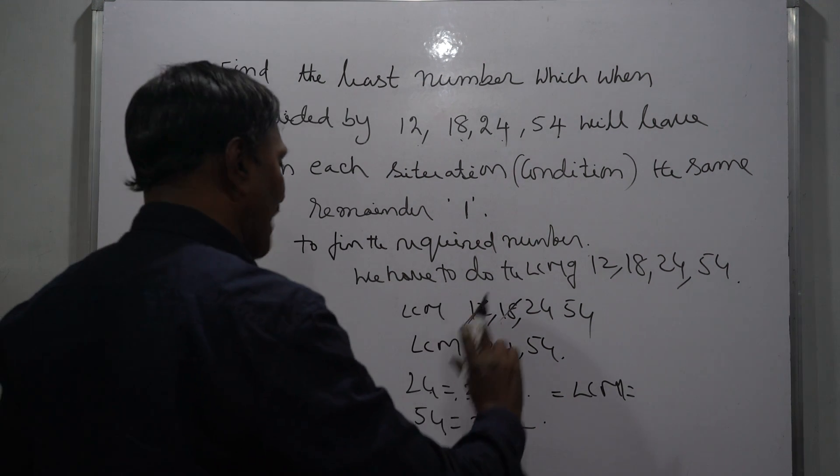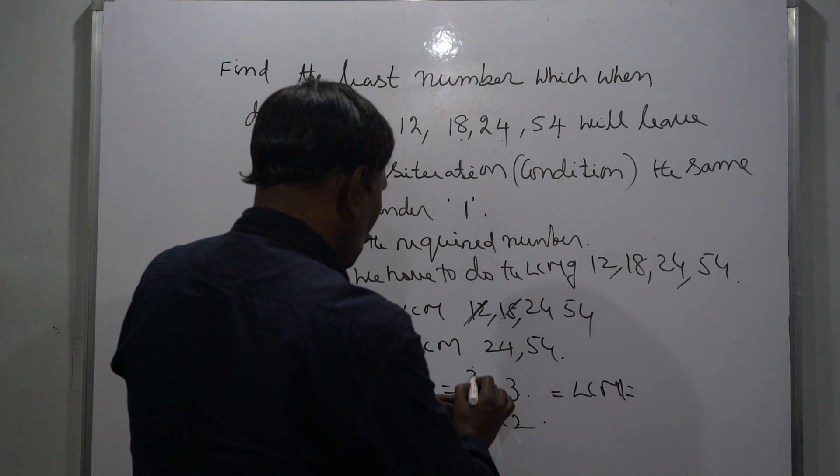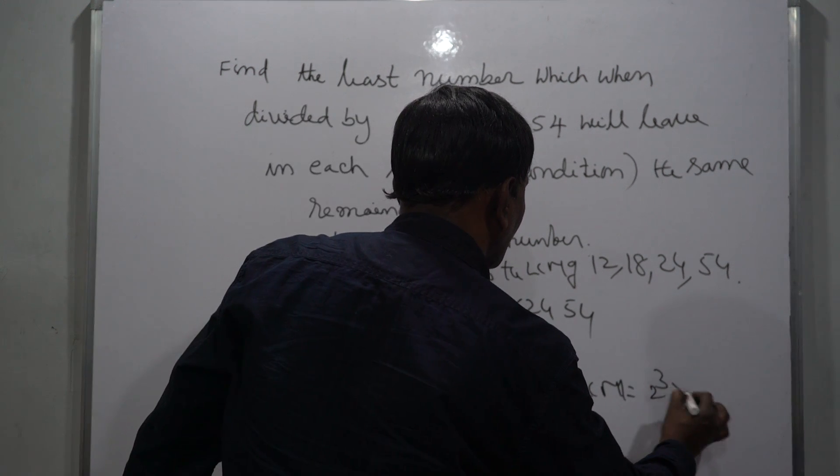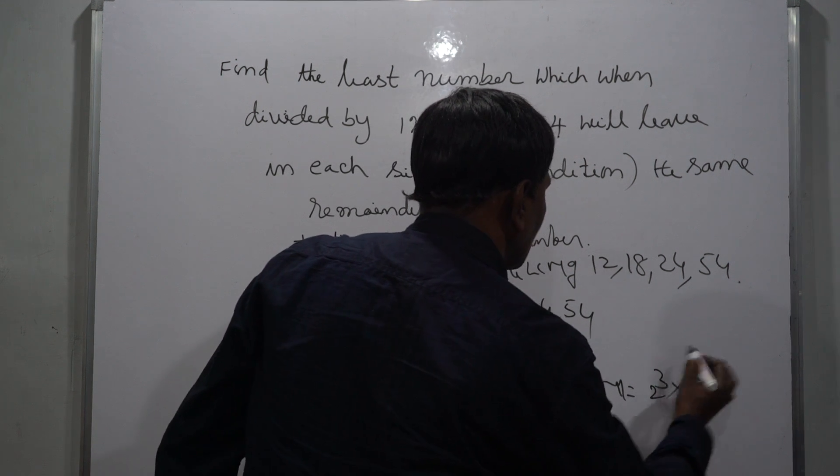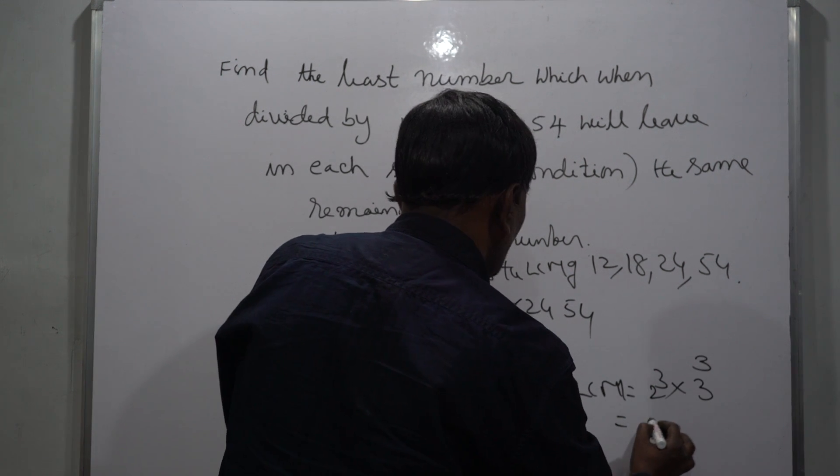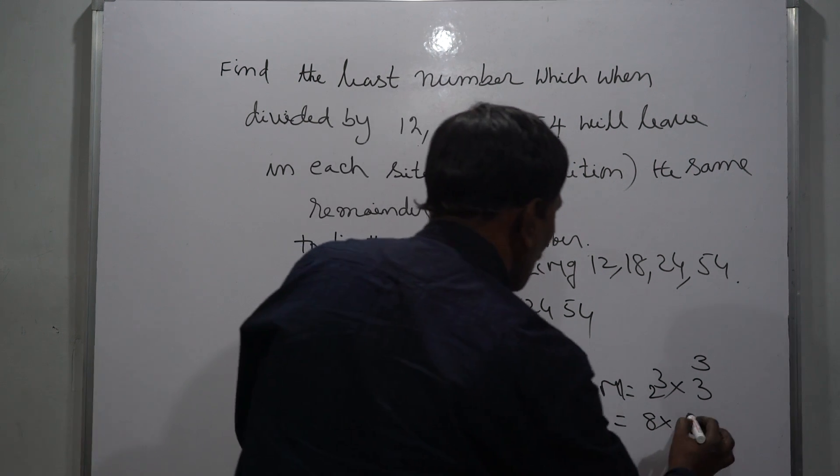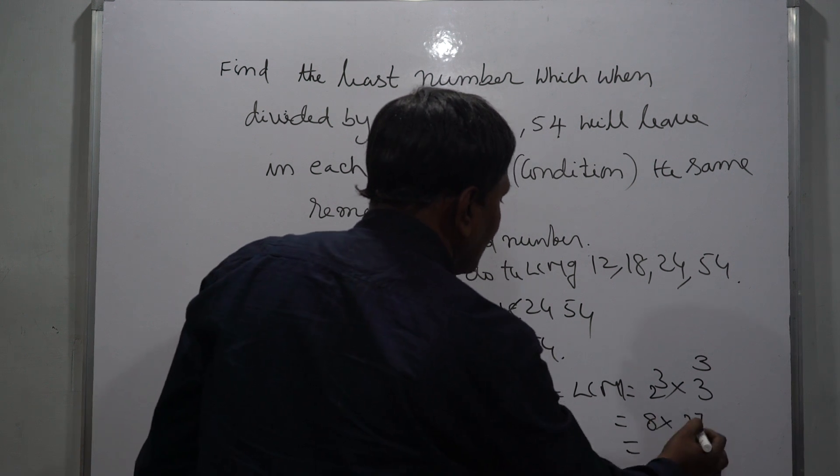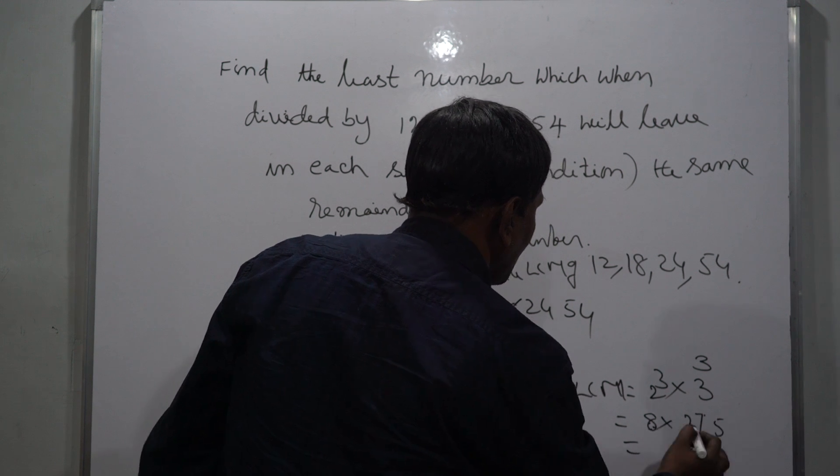2 to the power of 3 is the highest power, 3 to the power of 3 is the highest power. So 8 into 27: 8 into 7 is 56, 8 into 2 is 16, 16 plus 5 is 21. So the LCM is 216, but this is not the answer.